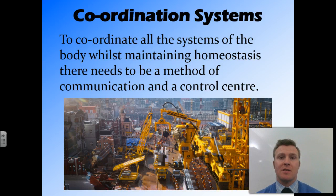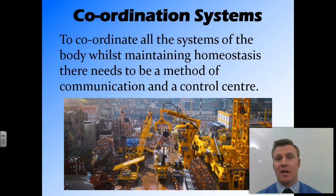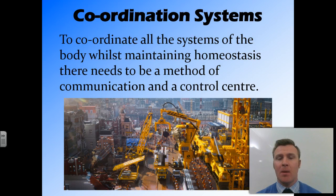Coordinating all the specialised systems of the body and maintaining a constant internal environment needs communication between all those systems and all the different parts of the body. So there needs to be a communication link — a way for them to communicate with each other — and a control center. A lot of the time in the body, the brain is the control center, or glands attached to the brain are control centers.